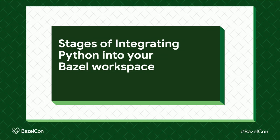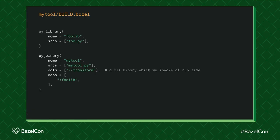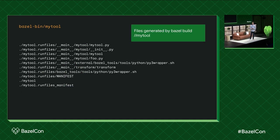Our Python integration went through several stages that I'm going to walk through. The first one is just getting started. Bazel actually has built-in rules for Python — you don't need an external rule set to get started. I've shown a toy example here where we have a Python library called FooLib with one source file, a Python binary called MyTool that depends on FooLib, its own source file, and some data dependencies — in this case a C++ binary defined somewhere else. If we run Bazel build on MyTool, we get quite a few files in the output.